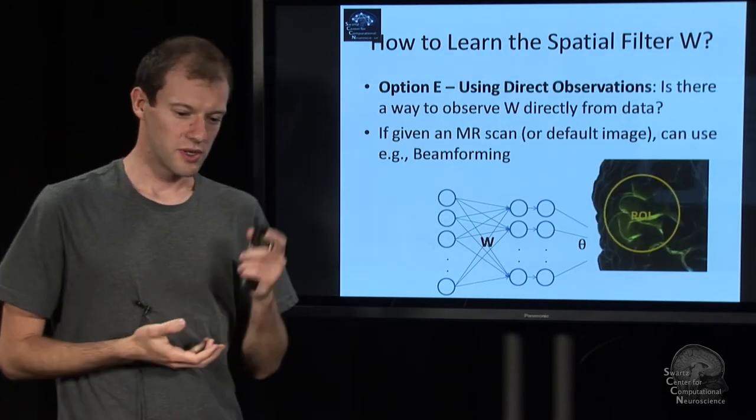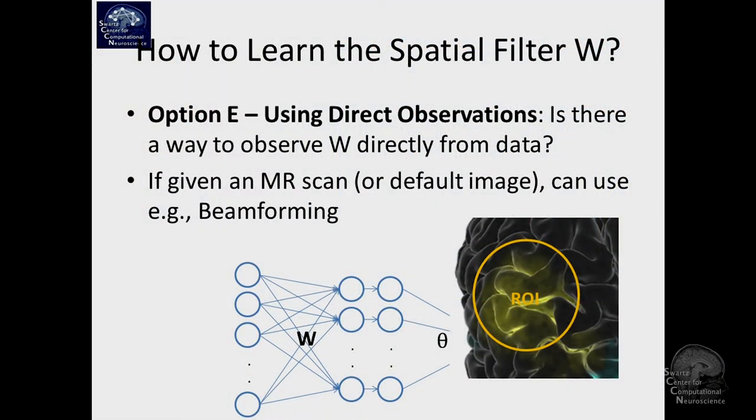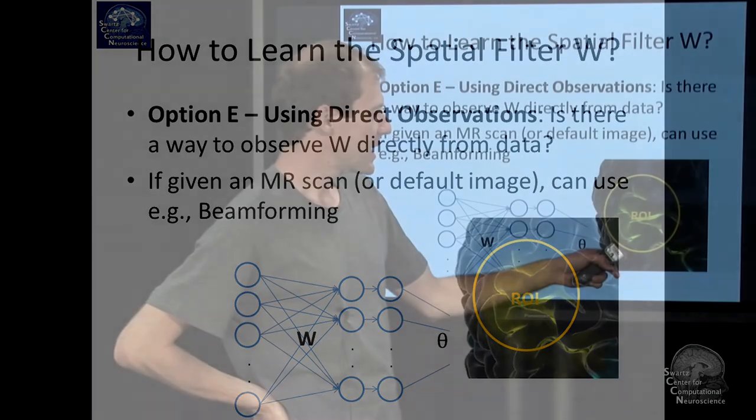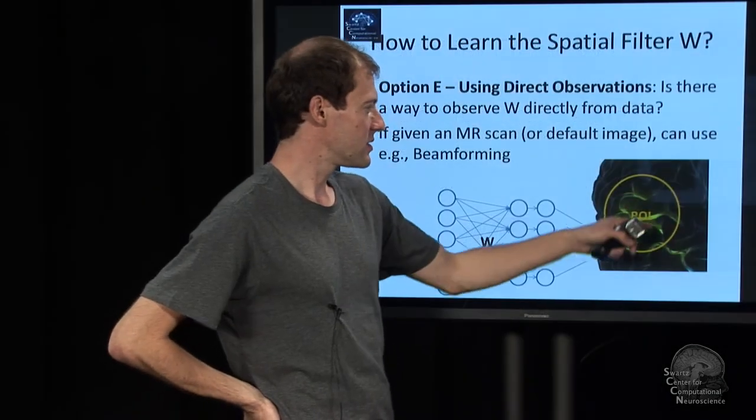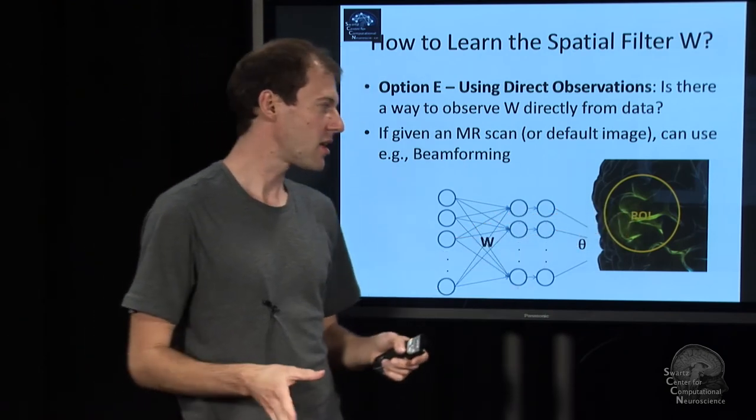So there's yet another way. And that is, instead of trying to calculate it, measure it. So if we know what we're looking for, say we think that the action happens here from an fMRI scan, if we get a scan of the cortical folds and all that of the person, and if we have an electromagnetic model, we could essentially calculate a good spatial filter.